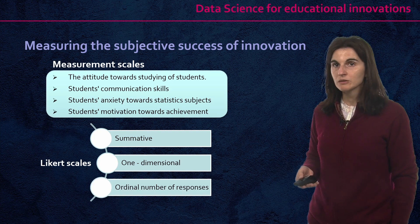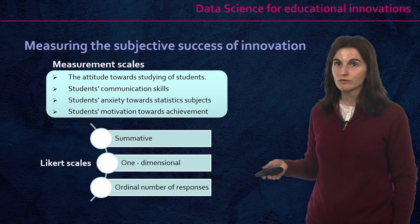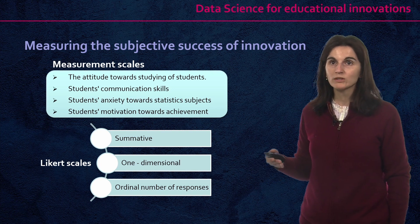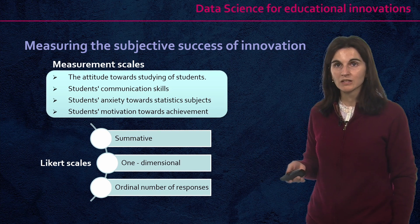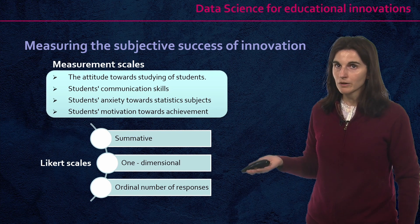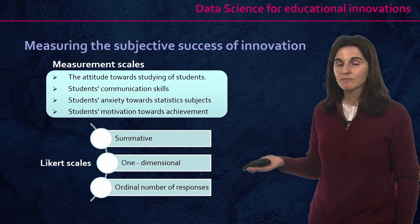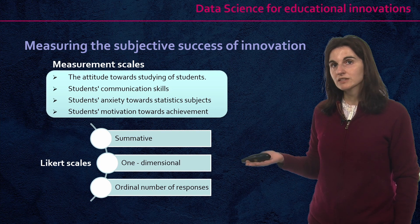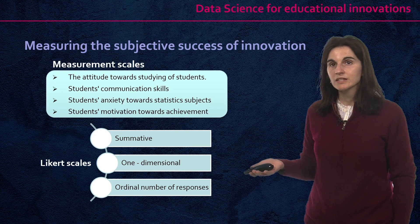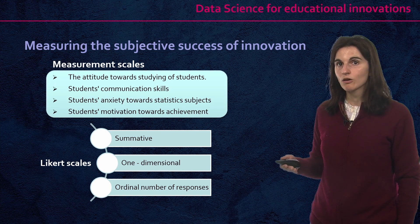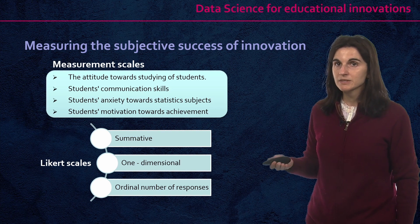These Likert scales have a limited and ordinal number of responses that in the majority of cases ranges from one to five, but it could range from one to seven or from zero to ten. There is no common agreement about which is the optimum number of response categories. The only agreement is that a five-point Likert scale is the minimum number of categories needed for the variable to behave like a continuous variable.